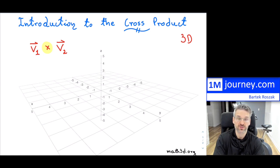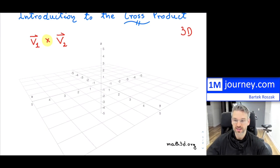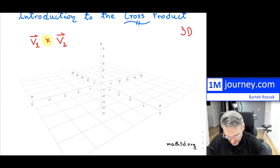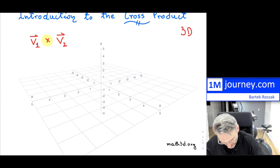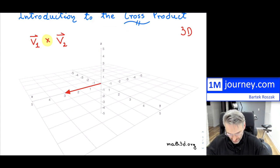This particular operator spits out another vector for us — a very special vector in three dimensions. I've borrowed this x, y, z plane to give you an intuition. Let's imagine that vector V1 is along the x-axis, so I'm going to draw one along the x-axis. That is my V1 vector.